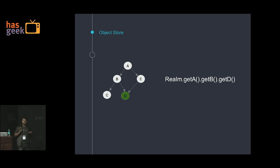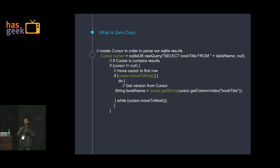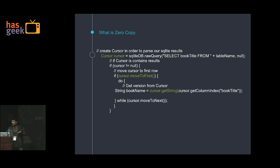There is also a very interesting concept of zero copy in Realm. What is zero copy? How many of you have used cursors? A cursor is precisely based on the zero copy principle — when you query SQLite, it gives you a cursor but it doesn't copy the data into memory. It just holds a reference, and when you say cursor.getString or move the cursor, it actually goes and fetches the data from SQLite. Realm is based on the same principle.